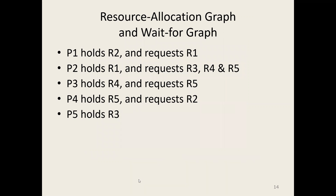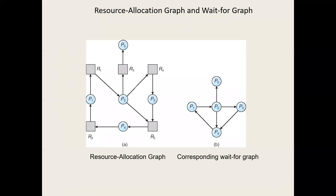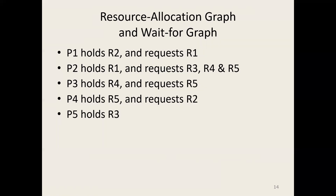According to the description given, P1 holds R2 and requests R1. That means the arrow should go from R2 to P1, and another arrow will go from P1 to R1. That is how we draw the resource allocation graph for each process, and the requested and holding resources should be available in the resource allocation graph.